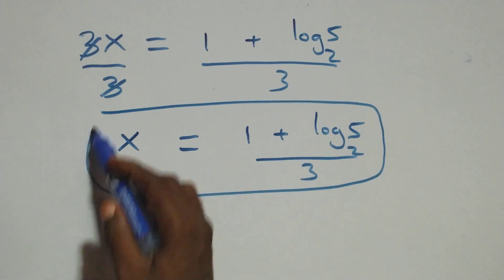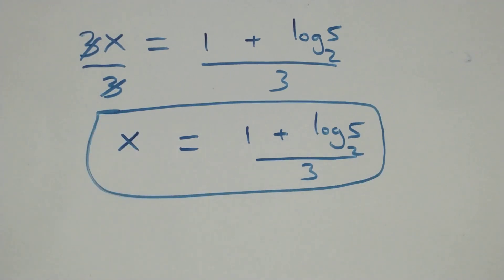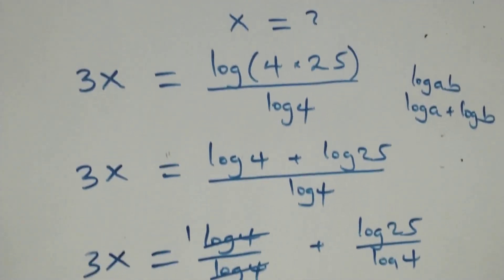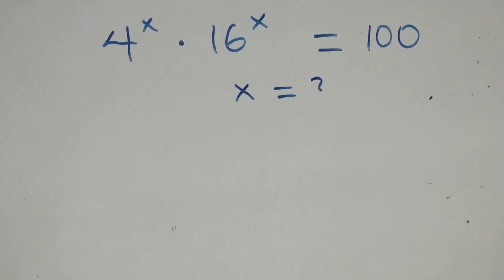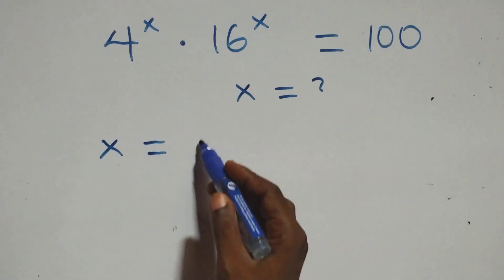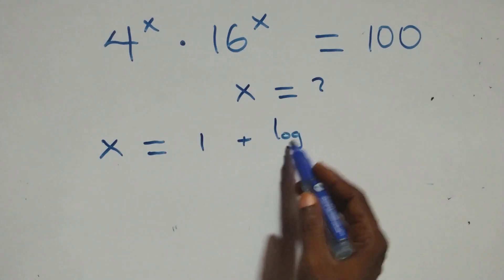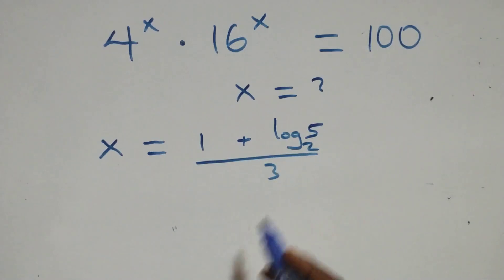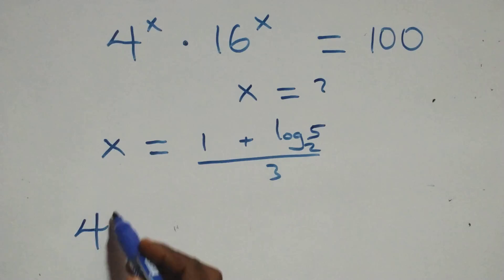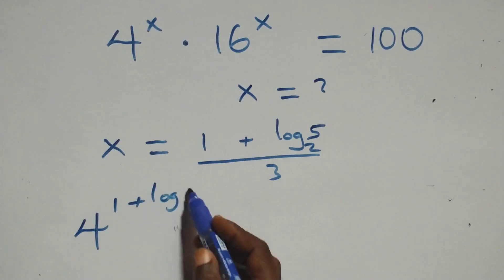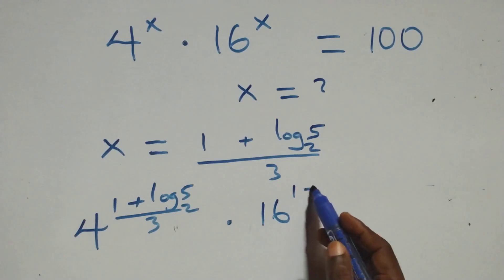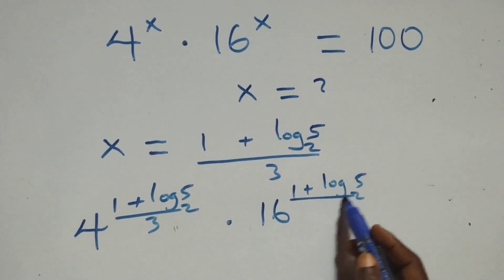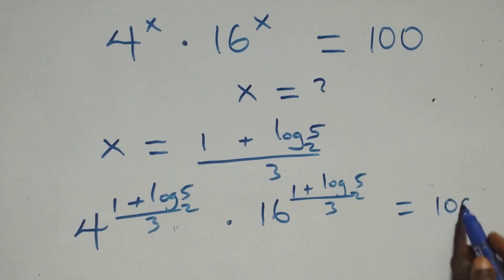The value of x is (1 plus log₂5) over 3. Let's check if this satisfies the given problem. We substitute the value x equals to (1 plus log₂5) over 3 back in: 4 raised to power (1 plus log₂5)/3 times 16 raised to power (1 plus log₂5)/3 — is this equal to 100?